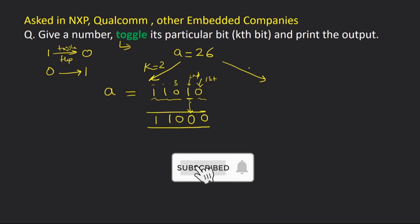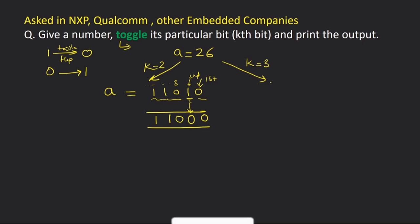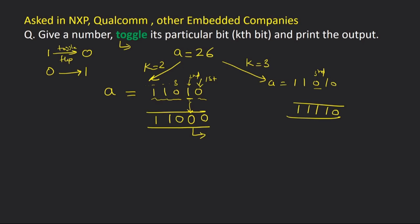Now say a = 26 and k = 3. a in binary is 1 1 0 1 0. k = 3 means this bit — this bit should be flipped, so if it is 0 it should be made 1, and all other bits should be copied. So for a = 26, k = 2, after toggling we get 24; and for a = 26, k = 3, the output should be 30.